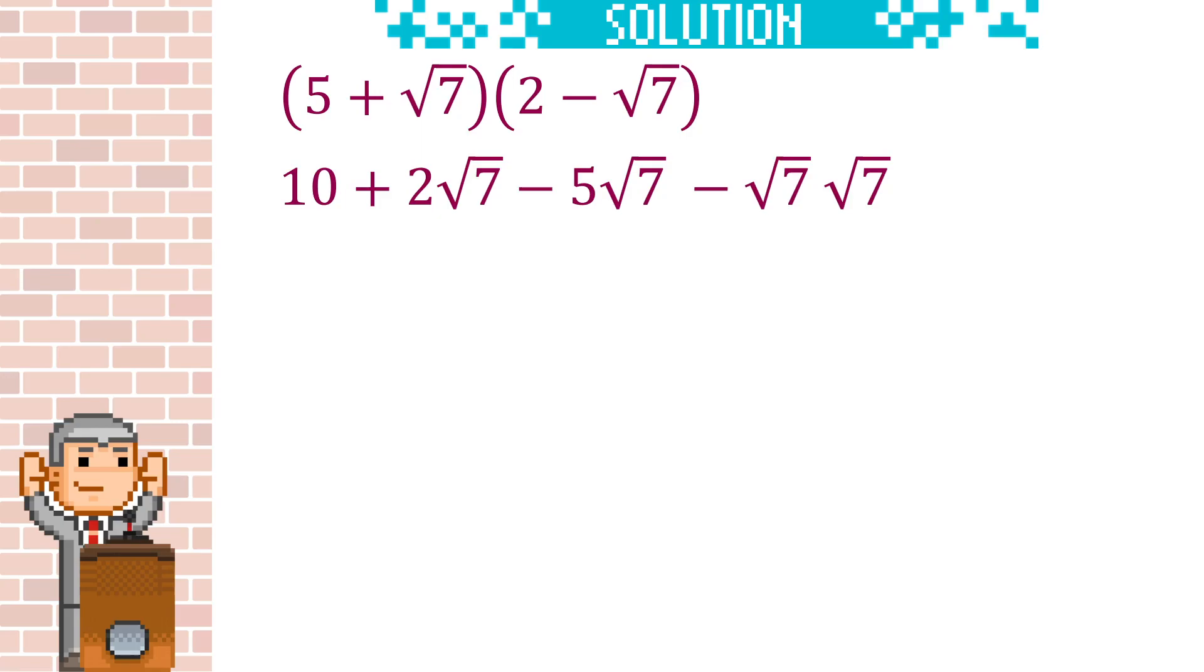Now, root 7 times root 7 is going to be root 49. Square root of 49 is just 7. So we learn here that any time you have a surd times by itself, you just get rid of the square root.